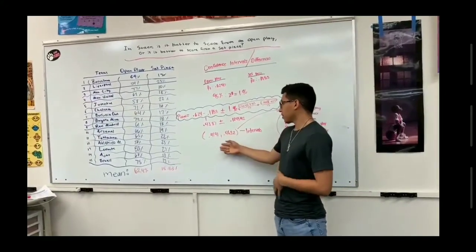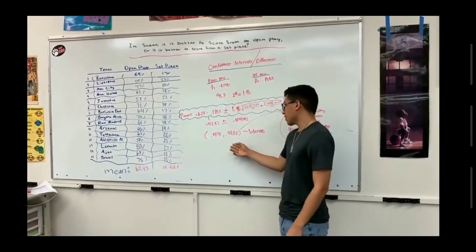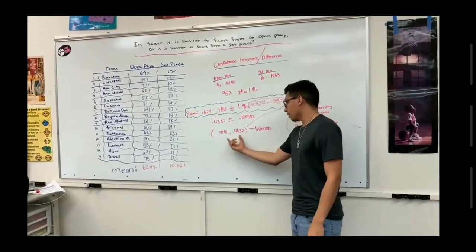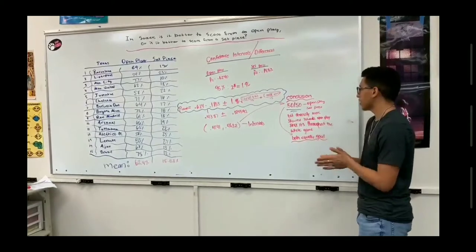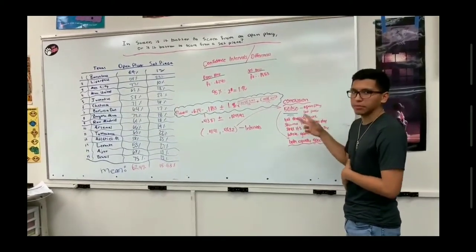So based on the intervals that we got, we know that the difference is between these two. Because it's between these two, we know that it's very small, so there's a 50% chance for both open play and set piece to occur, so they're both equally good.